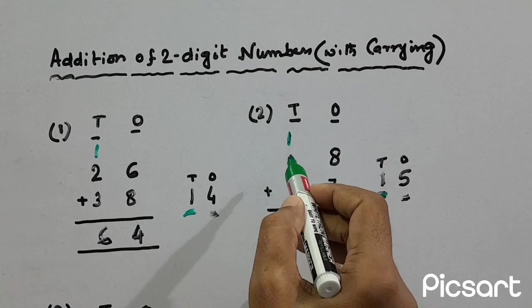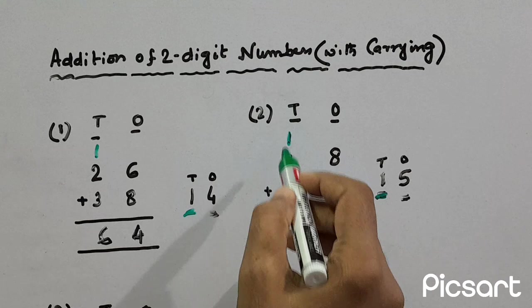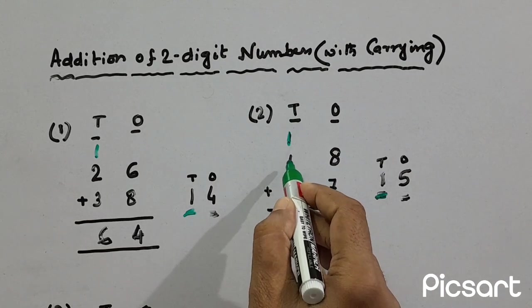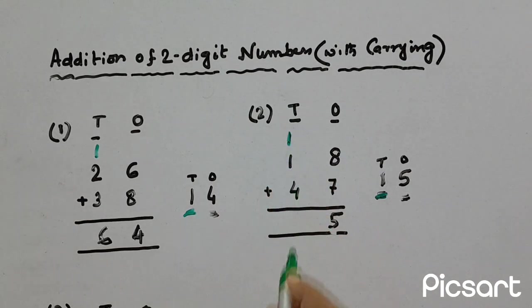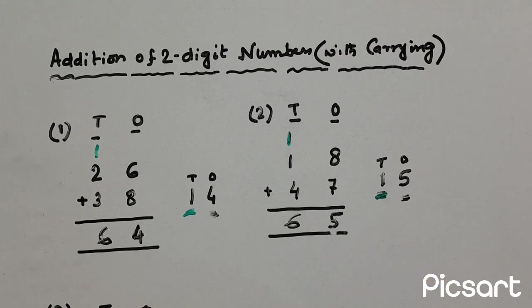Now we have four tens, one ten plus one ten. So if we add all these numbers, four plus one plus one, that means six. So 65 is the answer here.